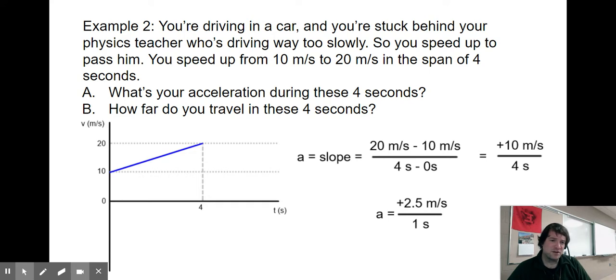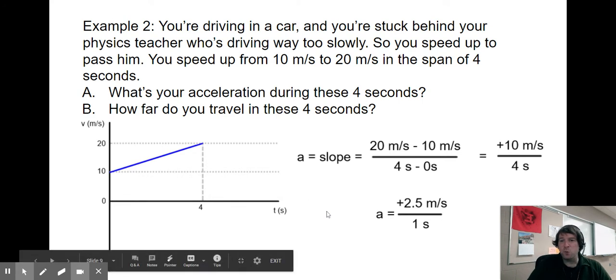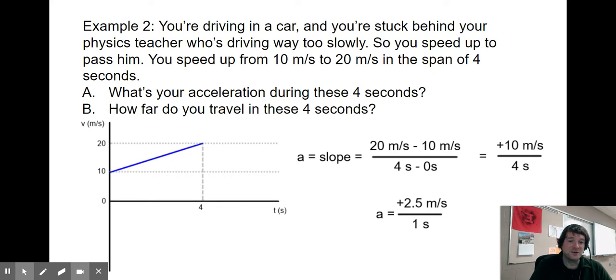So the acceleration is positive 10 meters per second divided by four seconds, or positive 2.5 meters per second for every second. What that acceleration tells us is that for every one second you're traveling, your velocity increases by 2.5 meters per second. We found the acceleration by taking a slope.